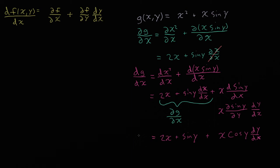And this is what we get for the full derivative dg/dx. This turns out to be the same thing we would have gotten if we just plugged g in for f in the formula. We've already seen that this term is the partial derivative. And now you should convince yourself that this term right here corresponds to this term in the original rule.